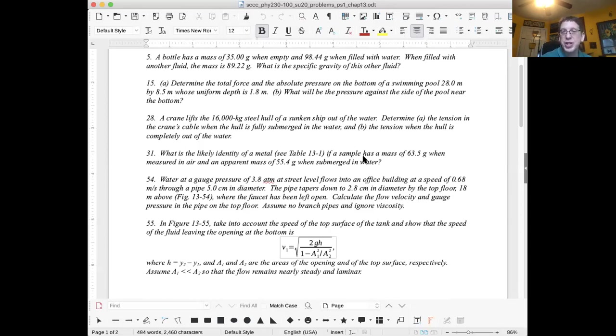That brings us to question 54. Water at a gauge pressure of 3.8 atm at street level flows into an office building at a speed of 0.68 meters per second through a pipe 5.0 centimeters in diameter. The pipe tapers down to 2.8 centimeters in diameter by the top floor, 18 meters above. The first thing is the continuity equation applies. The product of area times velocity is going to be constant. That's one equation.